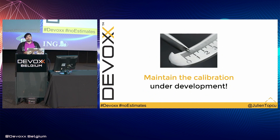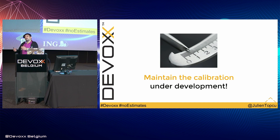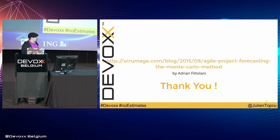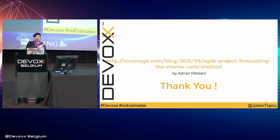Another complicated aspect is maintaining the calibration of your tasks during development. If you've started something and it takes more than two days of code to finish, you have to split what you're currently doing, create new tasks, and release in production what you've done. If you're not doing TDD, that's impossible. So that's all I've got. You have the link to Adrian Fittolani's blog where you can find the spreadsheet and more explanation on how Monte Carlo works technically — and there's a talk on InfoQ. Thank you.